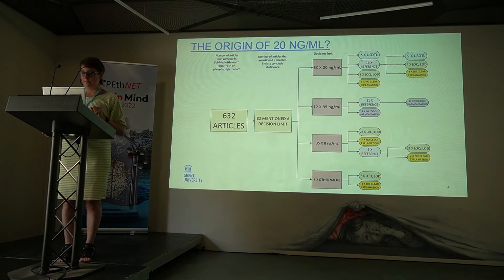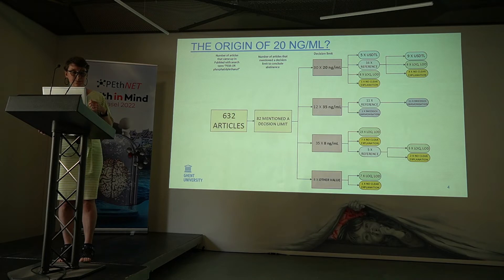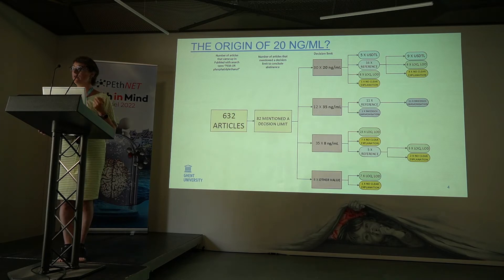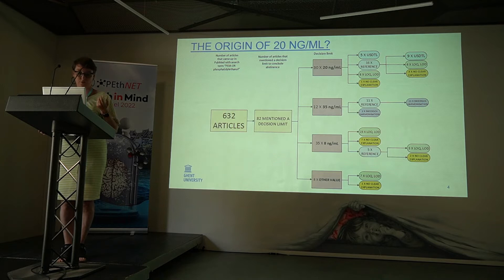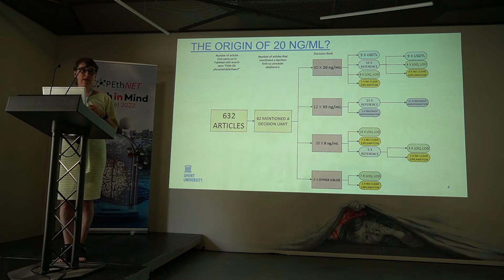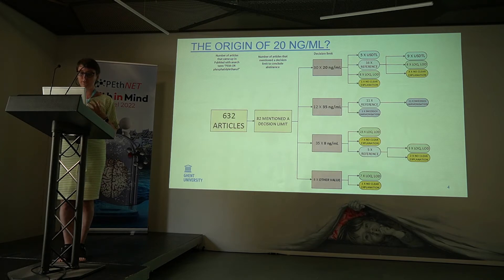She listed all of them. What we could see was that 30 of these 82 references used 20 nanogram per milliliter as a cut-off. 12 of them used 35 nanogram per milliliter. 35 references used 8 nanogram per milliliter as a cut-off. And 8 used another value ranging between 2 and 10. So she dug a little bit further because we couldn't really find why 20.